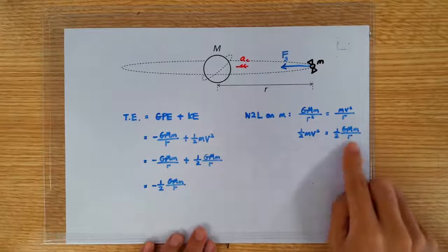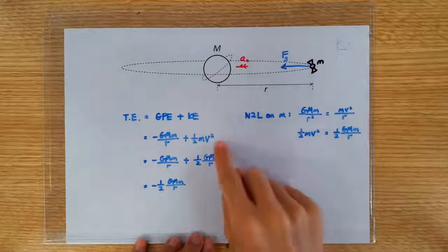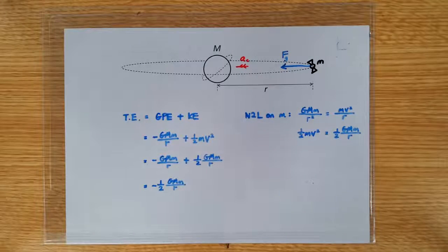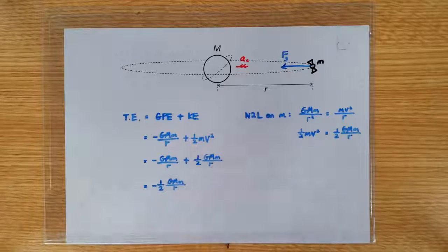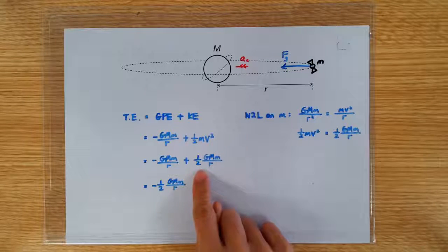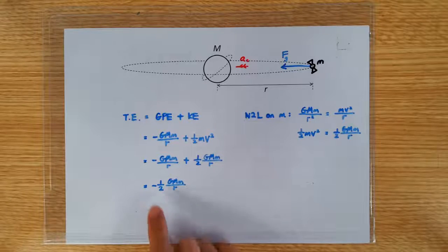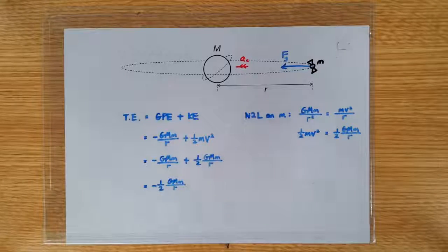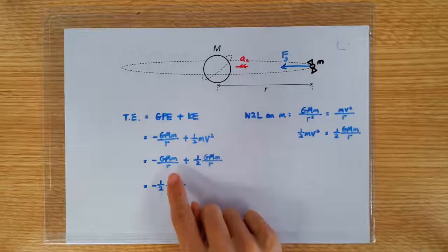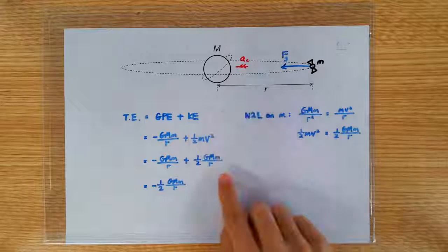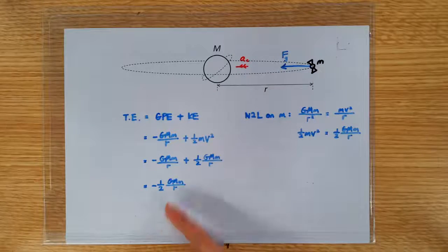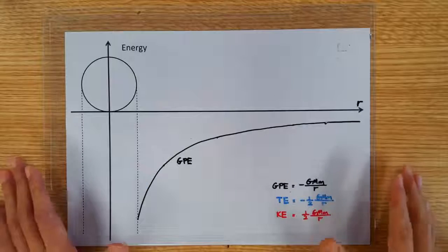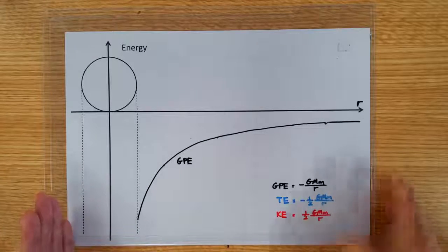So we are going to substitute this new expression for KE into our equation. Both the GPE and the KE share the common term GMm over R. So the total energy of the satellite turns out to be negative 1 plus half of GMm over R, which makes it negative half GMm over R. So the satellite has GPE of negative GMm over R, KE of half GMm over R, and its total energy — the summation of GPE and KE — is negative half GMm over R.